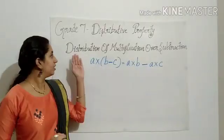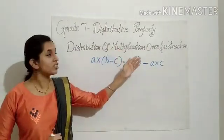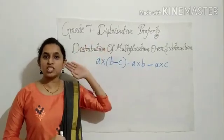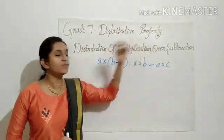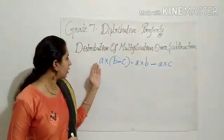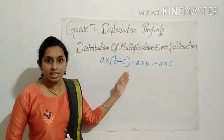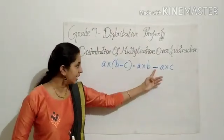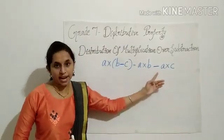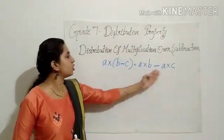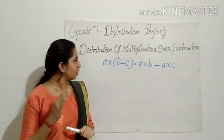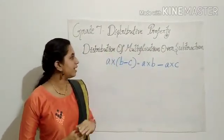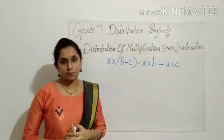Let us now check distribution of multiplication over subtraction. It was addition at first, and now we are checking for subtraction. A into B minus C equal to A into B minus A into C. So let us check whether multiplication distributes over subtraction.